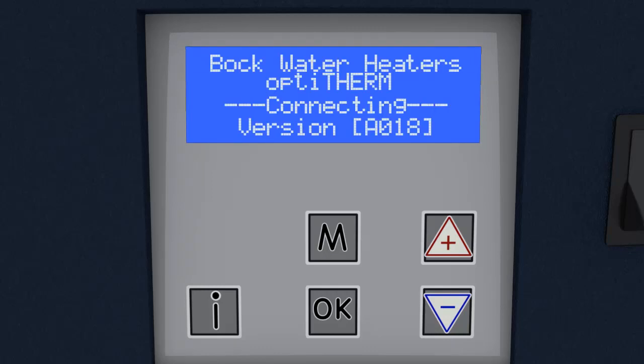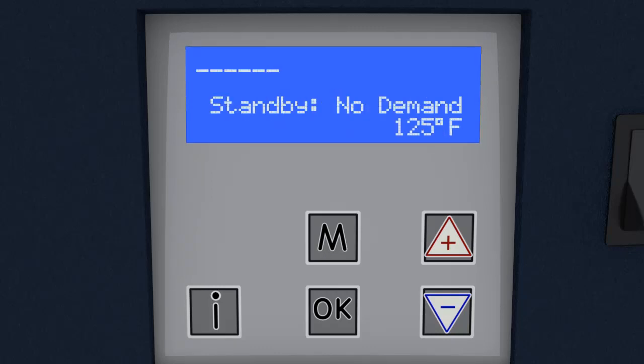Temperature adjustments and system status are available through the control and display. The home screen displays the current status of the water heater. The temperature displayed in the lower right corner is the actual water temperature at the top of the tank.